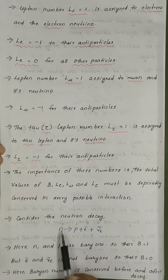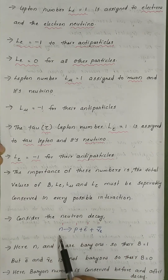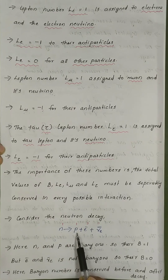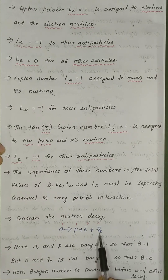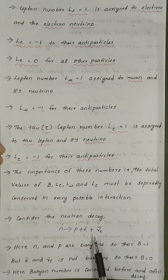Consider a neutron decay process. Here, the neutron decays to a proton, an electron, and an anti-electron neutrino. In this decay, the Baryon number and Lepton number are conserved.